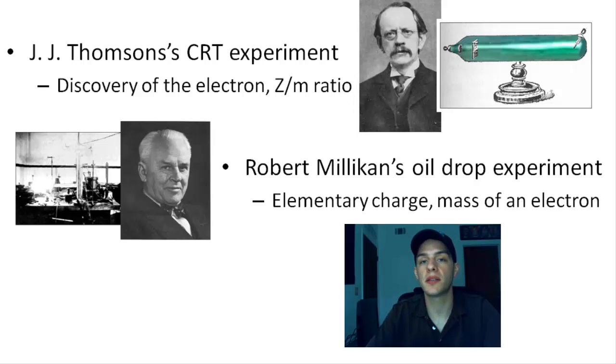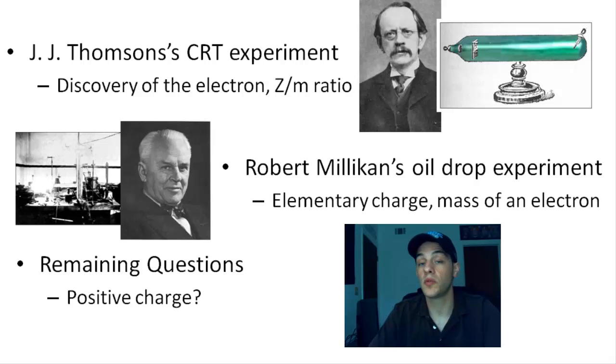But even in the midst of all of this data on electrons, there were still a lot of things that needed to be cleared up. There were still a lot of remaining questions. One of those big questions was what about the positive charge? We know we have these negatively charged electrons and we know that atoms themselves are electrically neutral. So where does the positive charge come from, and how does that fit in with those electrons to give us our electrically neutral atoms?